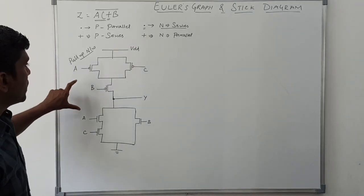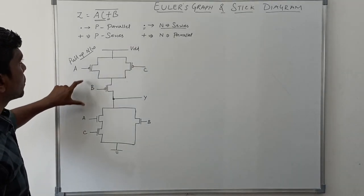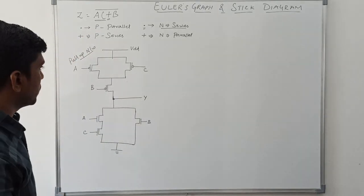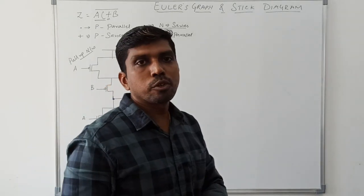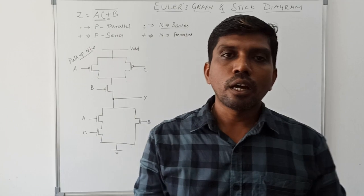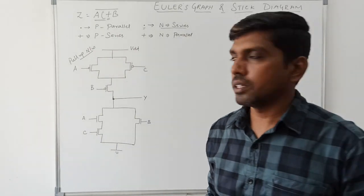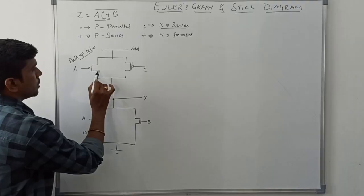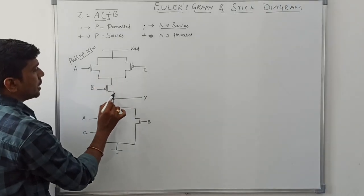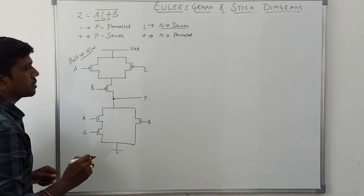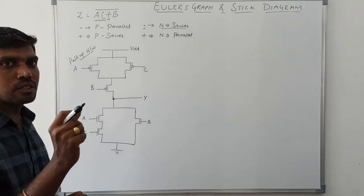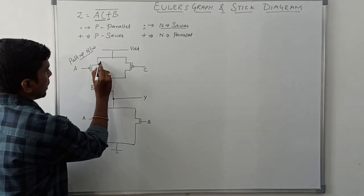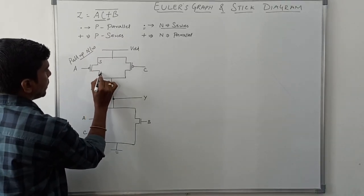This is the basic structure of CMOS logic for this corresponding boolean expression. After drawing this CMOS logic, now I find the Euler path. The Euler path is among these three transistors — any one of the transistors can be set as the starting point. Before that, I assign the source and drain terminals.